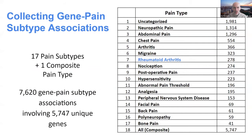These are the 17 pain types and the number of genes associated with each. In this lecture, I'm going to focus on RA, but in general we can do the same analysis for other pain types of interest. Overall, we had 7,620 gene-pain-type associations involving almost 6,000 genes.